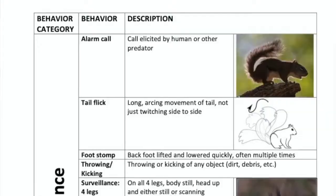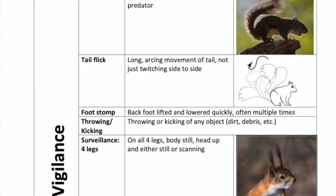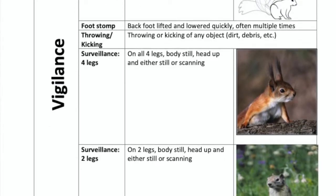We'd like to start by going over the ethogram, which you will be using to measure and identify these different behaviors. An ethogram is a tool that many scientists use when studying animal behavior because it describes all of the possible behaviors that the animal you're watching can do.